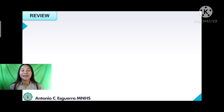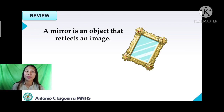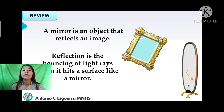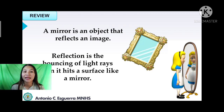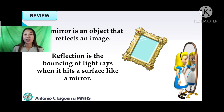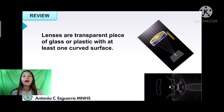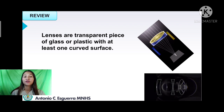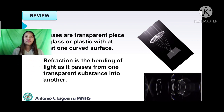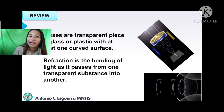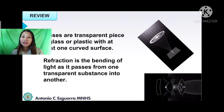Let's have a review of our previous discussion. We discussed that a mirror is an object that reflects an image. When light bounces back, it follows the law of reflection — the bouncing of light rays when it hits a surface like a mirror. We also discussed lenses: transparent pieces of glass or plastic with at least one curved surface, which follow the law of refraction, where light bends as it passes from one transparent substance into another.